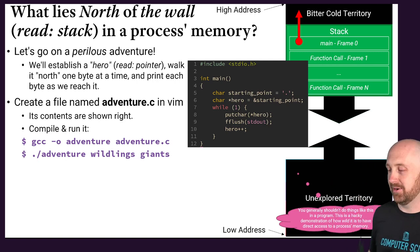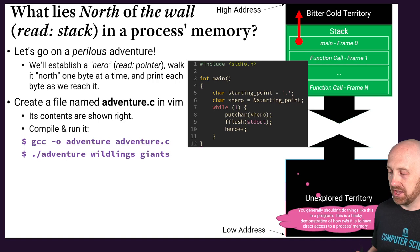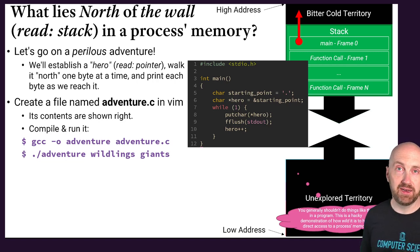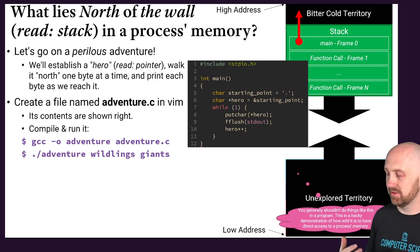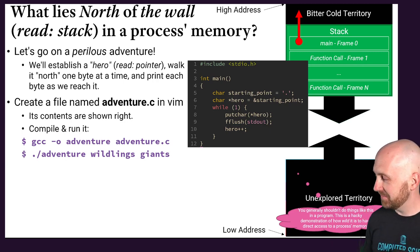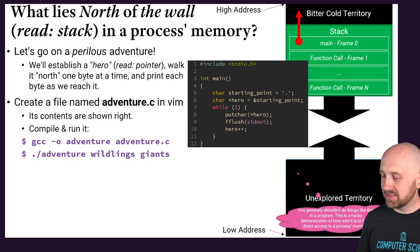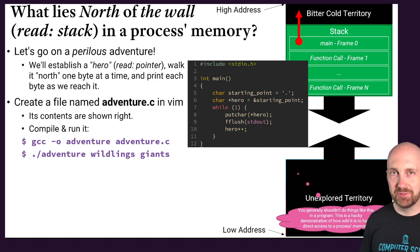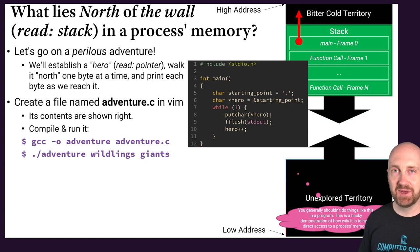Go ahead and try reproducing this file and running it. Compile it and name the output binary 'adventure', then run it with dot-slash adventure and arguments like 'wildlings' and 'giants' — a homage to Game of Thrones. Pause and reflect on what you're seeing, then we'll come back and talk about what is going on in the address space above the call stack.